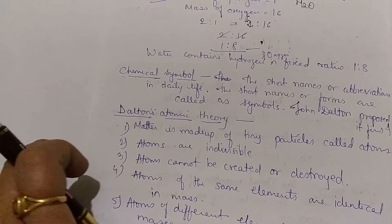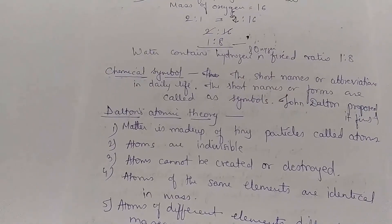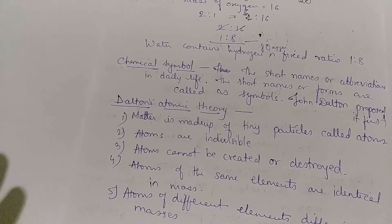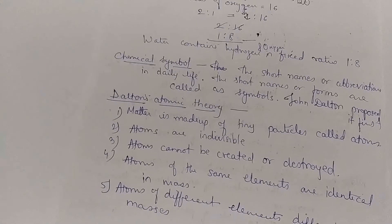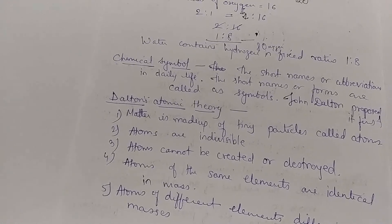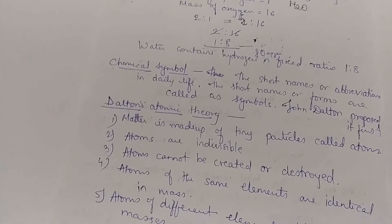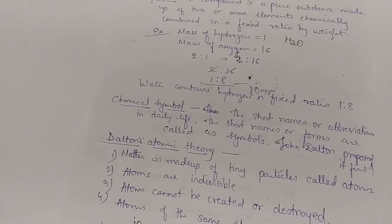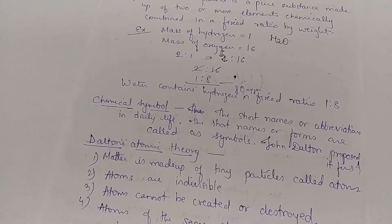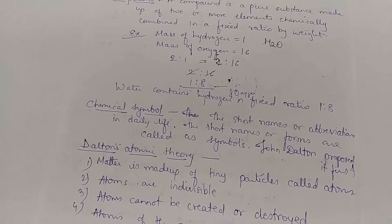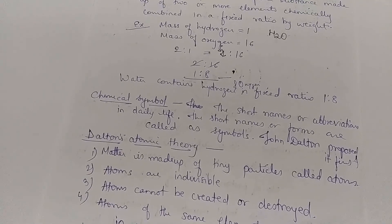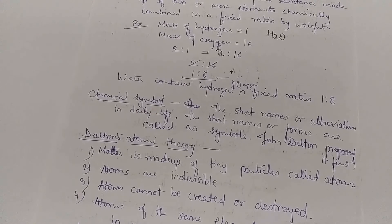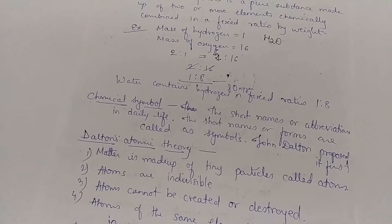A chemical symbol is the short form or abbreviation used to indicate a chemical element. Just as road signs indicate what is coming ahead, chemical symbols are abbreviations used in chemistry. John Dalton was the first chemist to propose that symbols be used for chemical substances.